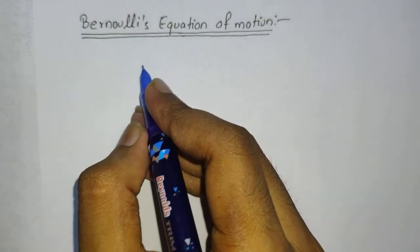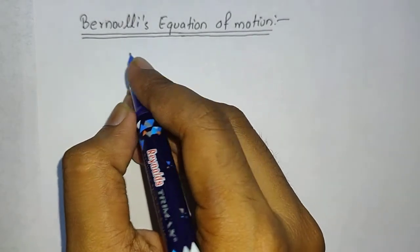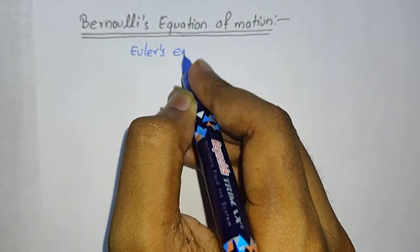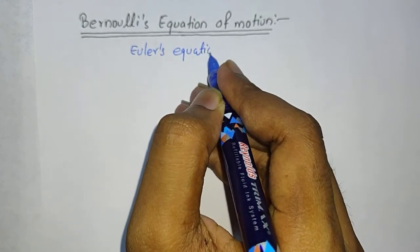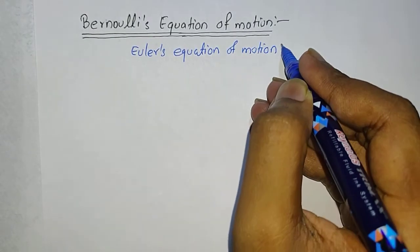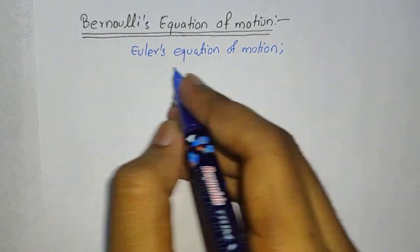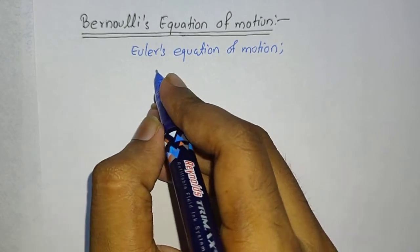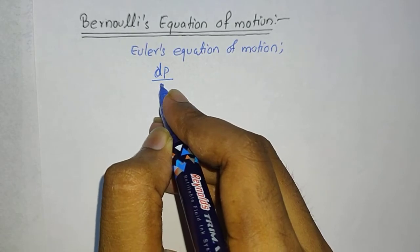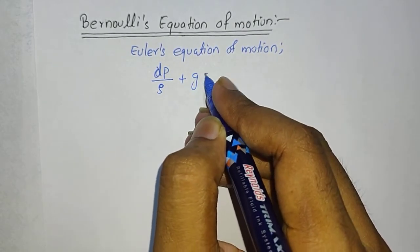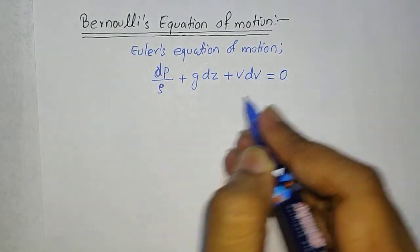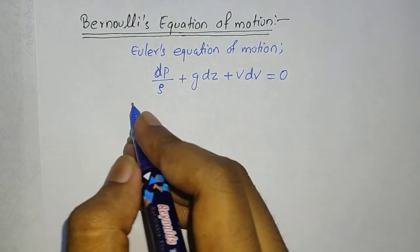To begin the video we first need Euler's equation of motion. Euler's equation of motion is written as: dp/ρ + g·dz + V·dV = 0. This is our Euler's equation of motion.